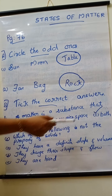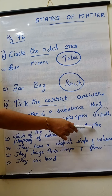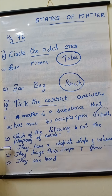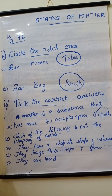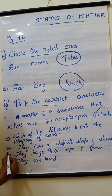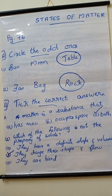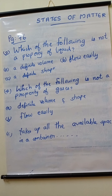Second question, which of the following is not the property of solids? First option: they have a definite shape and volume. We know that it is a property of solids. Second option: they change their shape and flow. Solids do not change their shape and will not flow. So this is not the property — option B. Third option is that they are hot, which is a property of solids.